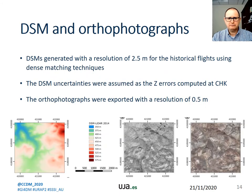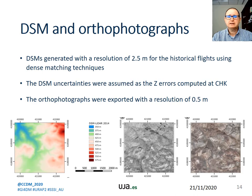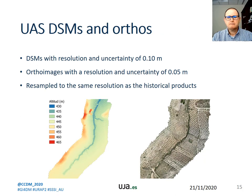Next, the generation of digital surface models and orthophotographs are addressed. DSMs are generated with a resolution of 2.50 meters for the historical flights using dense matching techniques. DSM uncertainties were assumed as the vertical errors computed at checkpoints. The orthophotographs were exported with a resolution of 0.50 meters. From the UAS images, DSMs are generated with a resolution and uncertainty of 10 cm.